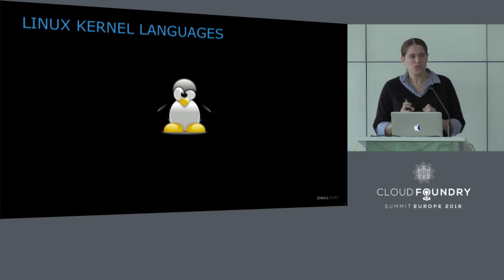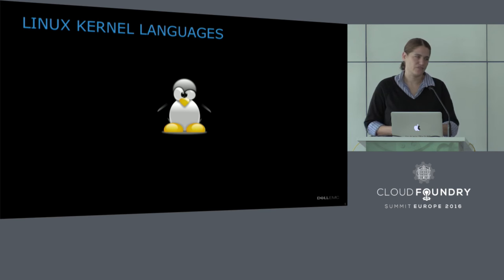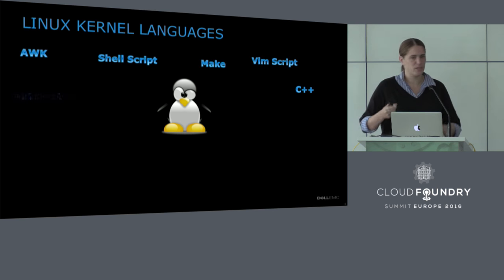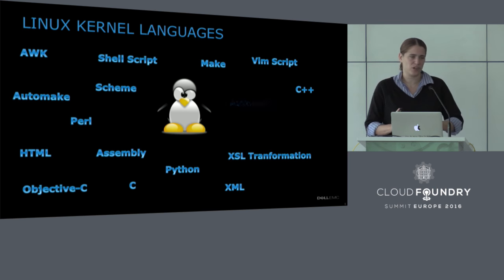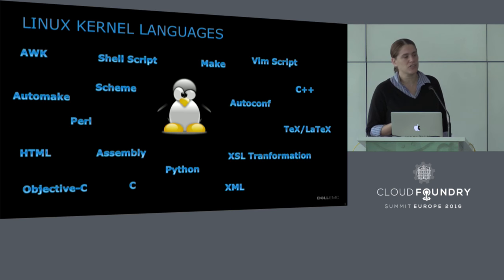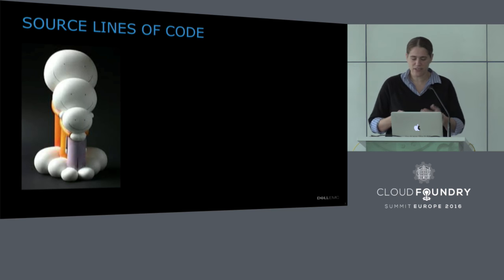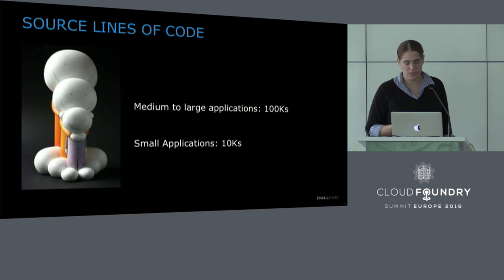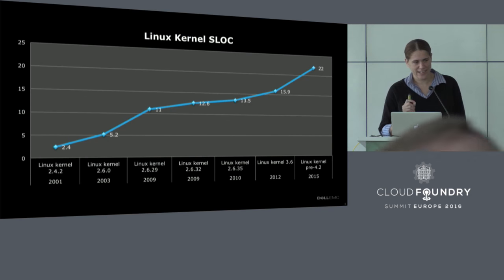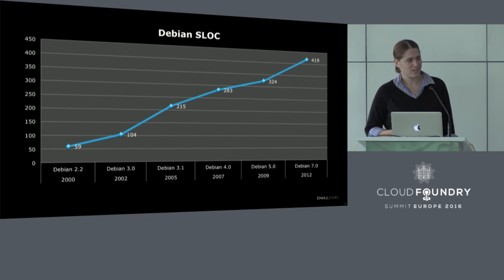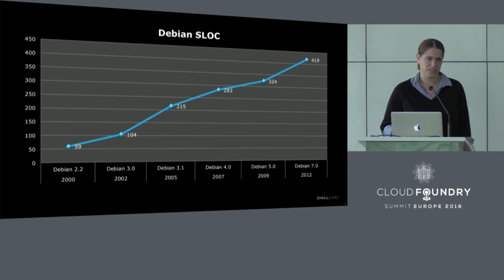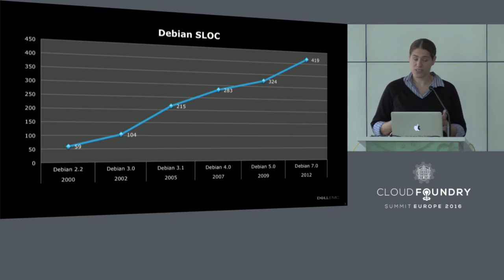I just want you to understand what you're running. The kernel language — in order to support one kernel, you need to know all these technologies. This is your Linux kernel. I'm not even talking about your distro of Ubuntu or Debian. In terms of size, a small application today is around 10K lines of code; medium to large is probably 100K lines; a huge application is millions. The Linux kernel alone is 22 million lines of code. The Debian distro is 419 million lines of code. Think about the potential bugs and how you actually prioritize maintaining that.